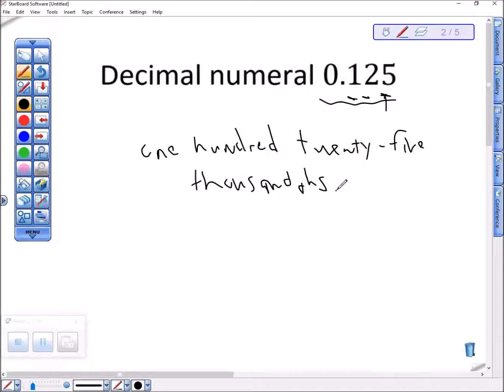Now recall, 125 thousandths is the same as 125 over 1000. Now we could simplify that fraction, but let's not worry about that. Here's how we can quickly write or quickly pronounce a decimal numeral and then write it as a fraction.